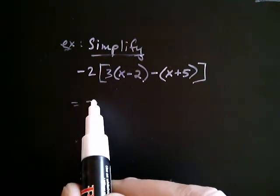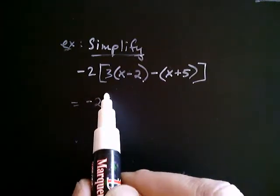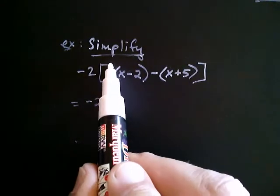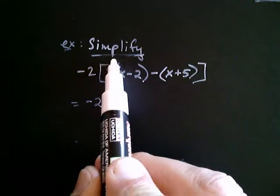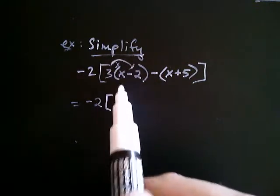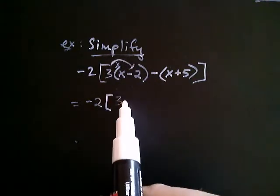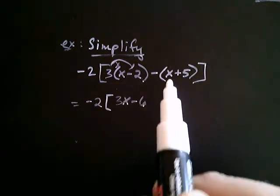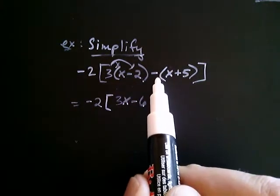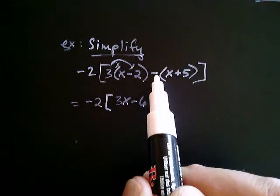So, this negative 2 is still there, so it's going to be negative 2 times, okay, distributing the 3, I'm going to get 3x minus 6. And now distributing this, remember, this is a negative 1 like we were mentioning a moment ago.